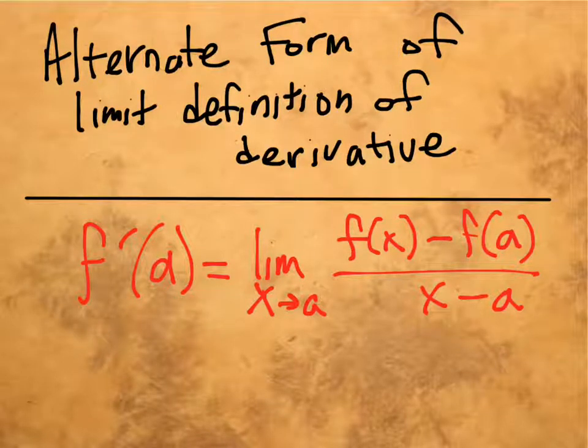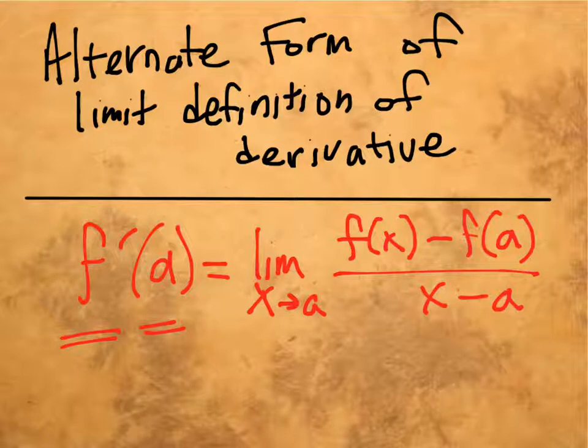In this video we're looking at the alternate form of the limit definition of derivative, which is this formula here in red. It says that the derivative f prime at some number a is found by taking the limit as x approaches a of this quantity here.